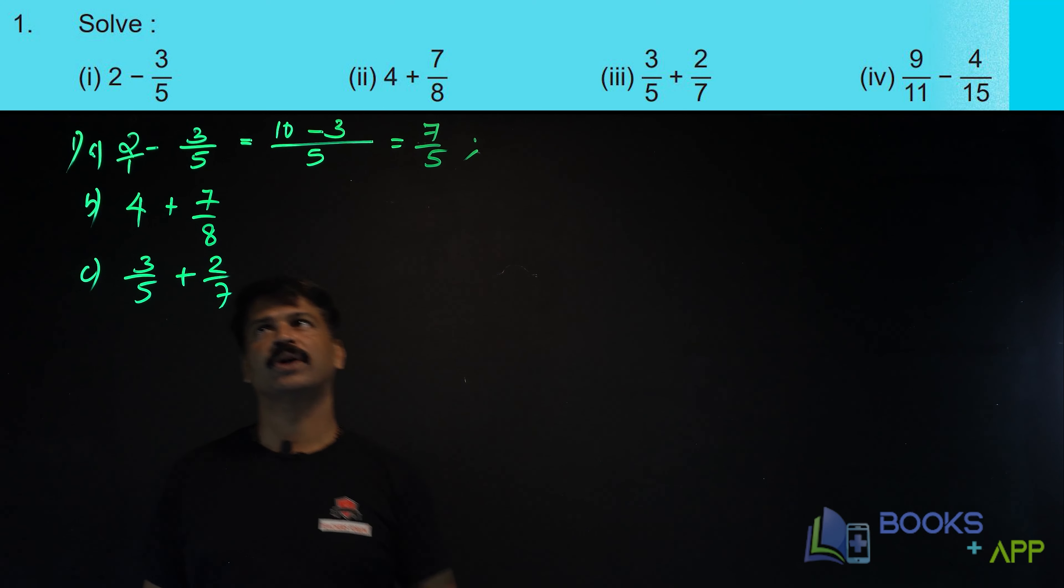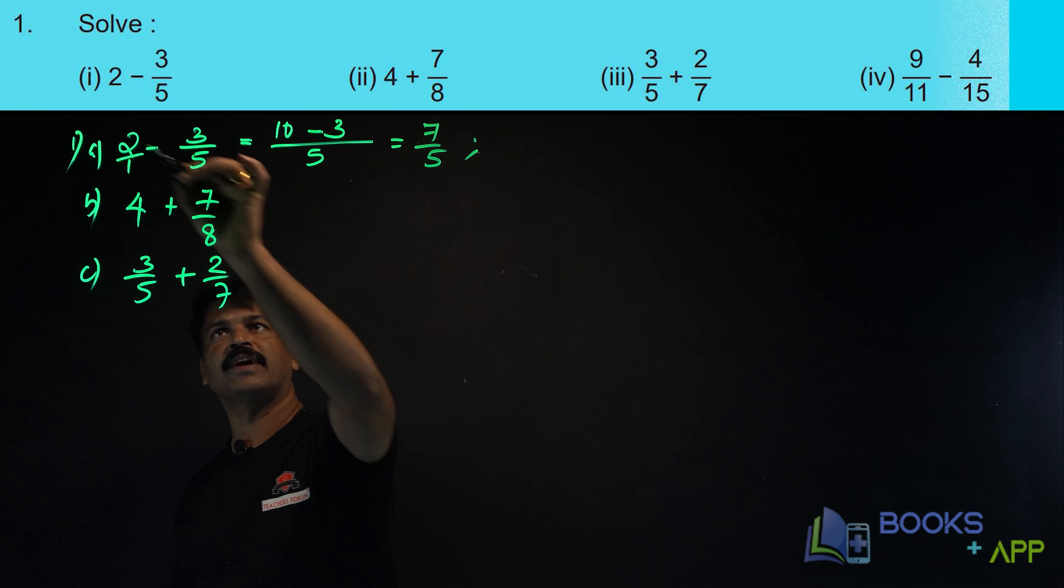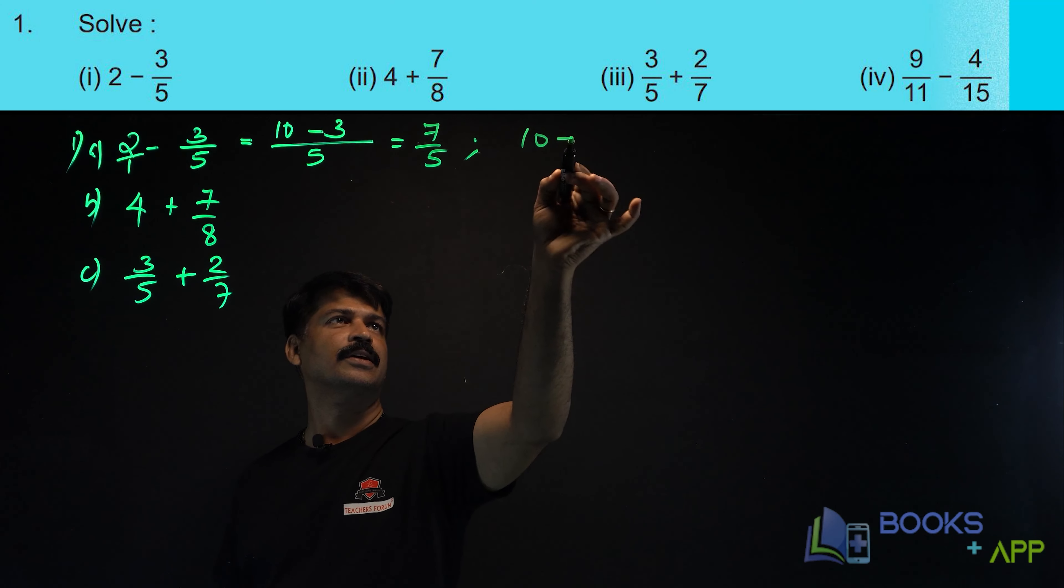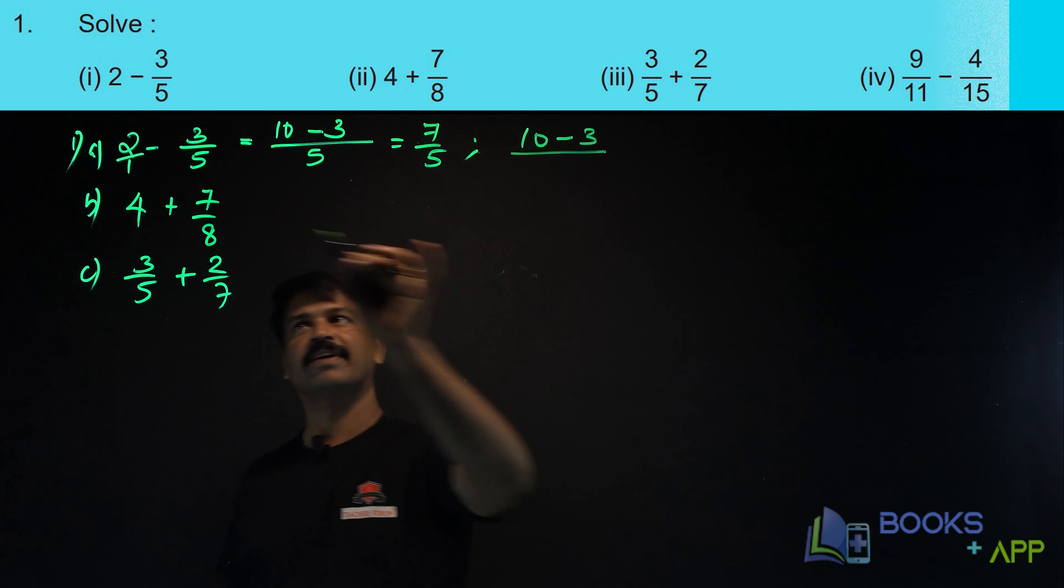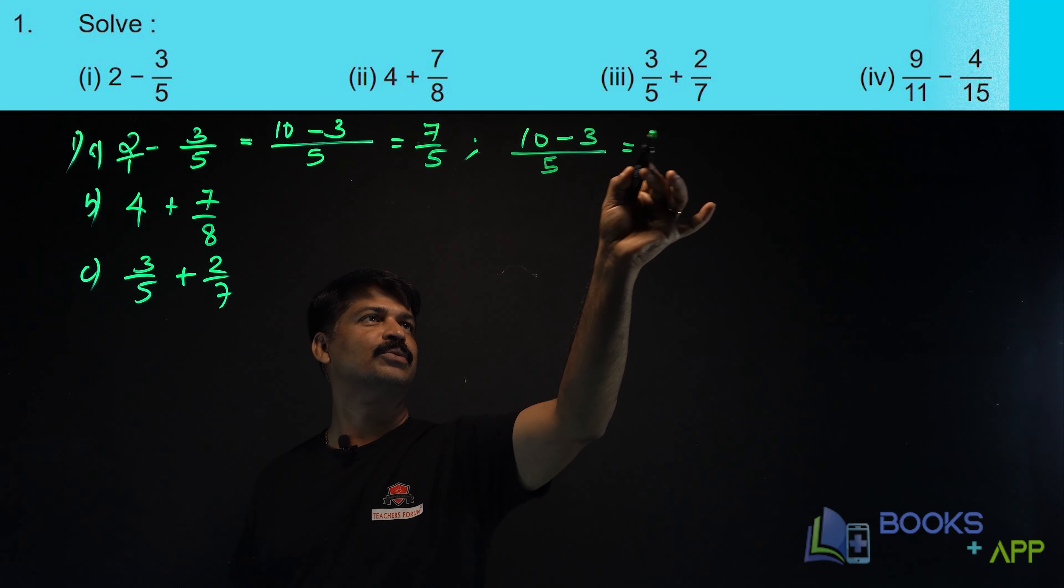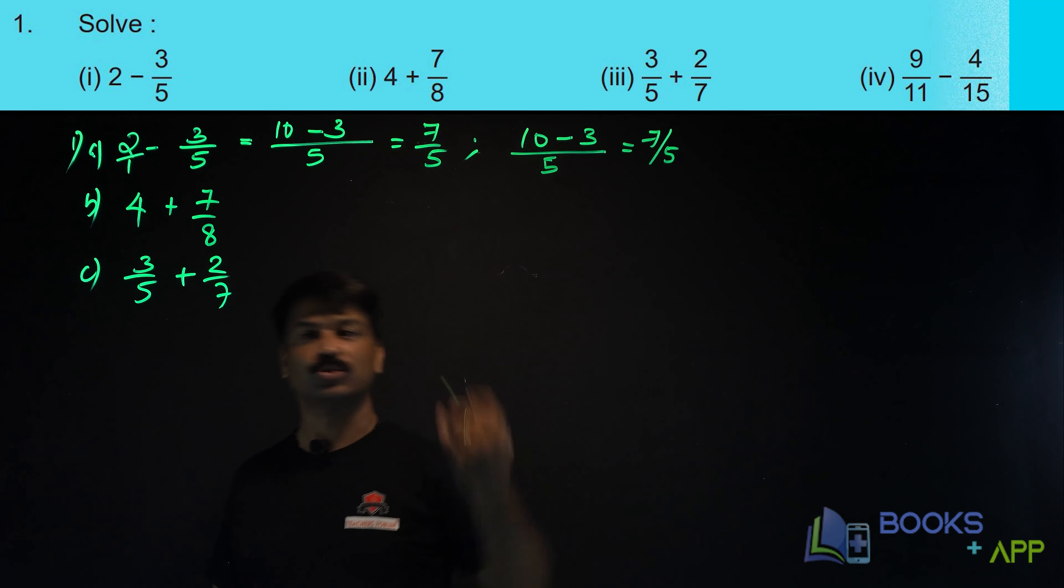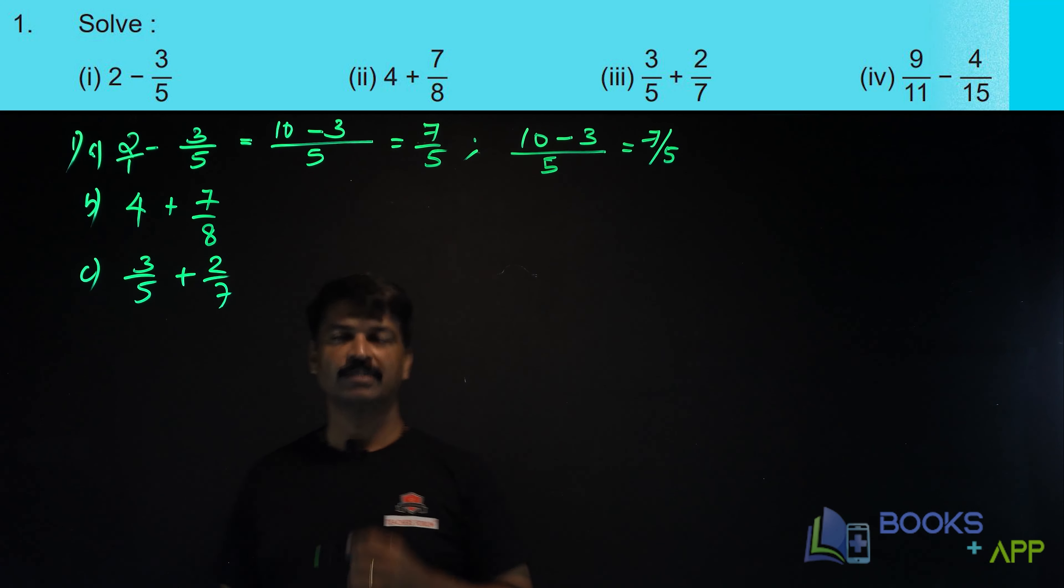Or in another way, you can do. You just multiply this. 5 into 2, 10 minus 1 into 3, 3 divided by 1 into 5, 5. That is equal to 7 by 5. The answer is same. In that way also, you can find the solution.